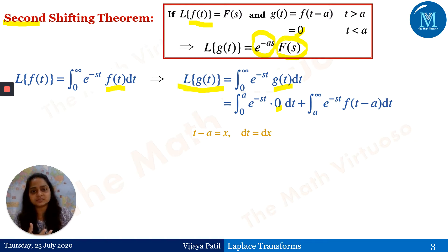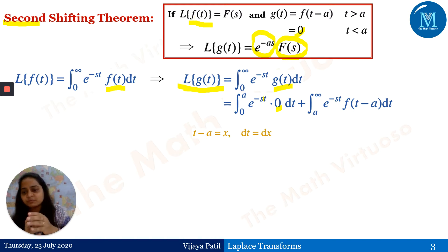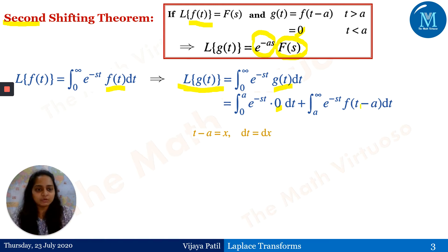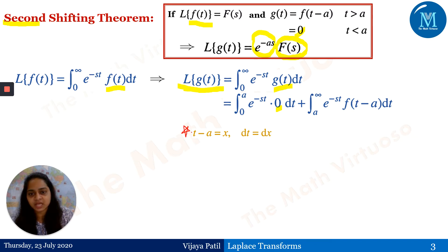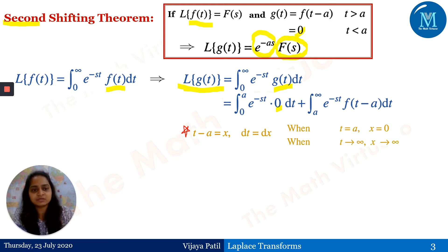I need to write the Laplace transform of g(t) in terms of F(s). Since F(s) is the Laplace transform of f(t), I need to reach the definition of the Laplace transform in my proof. To do that, I want the variable of integration to appear as f of that variable, which is why we take the substitution t minus a equals x. So dt becomes dx, and when t equals a, x becomes zero; when t goes to infinity, x also goes to infinity.